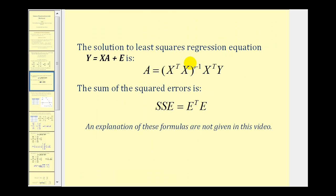We won't derive these formulas here, but to solve the matrix equation, matrix A equals the inverse of (X^T times X) times the product of X^T and Y. And the sum of the squared errors is equal to the transpose of matrix E times matrix E.